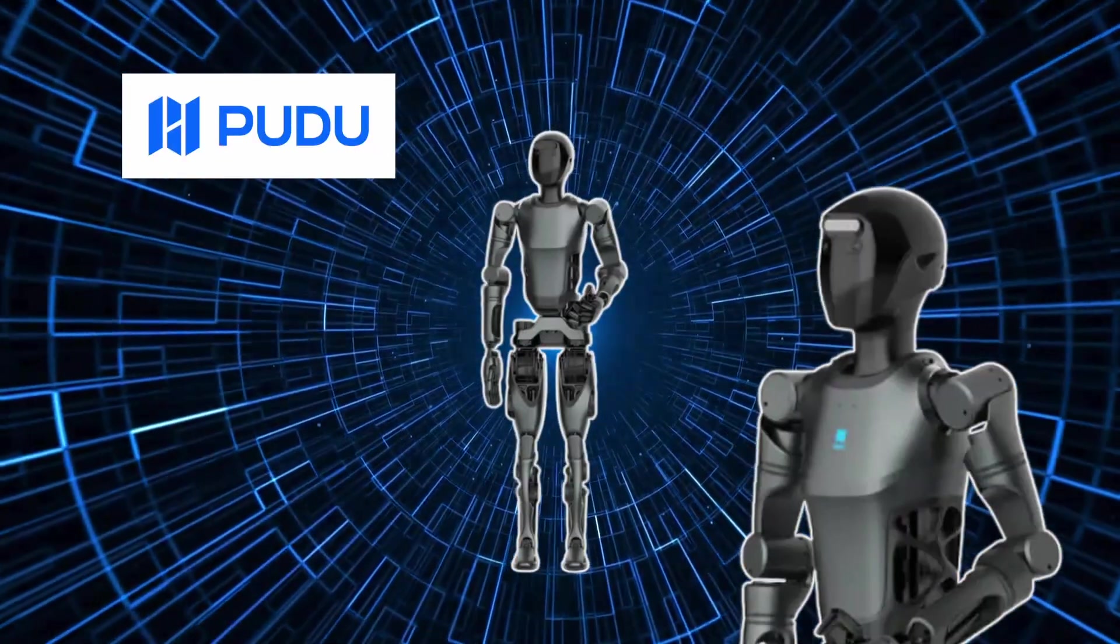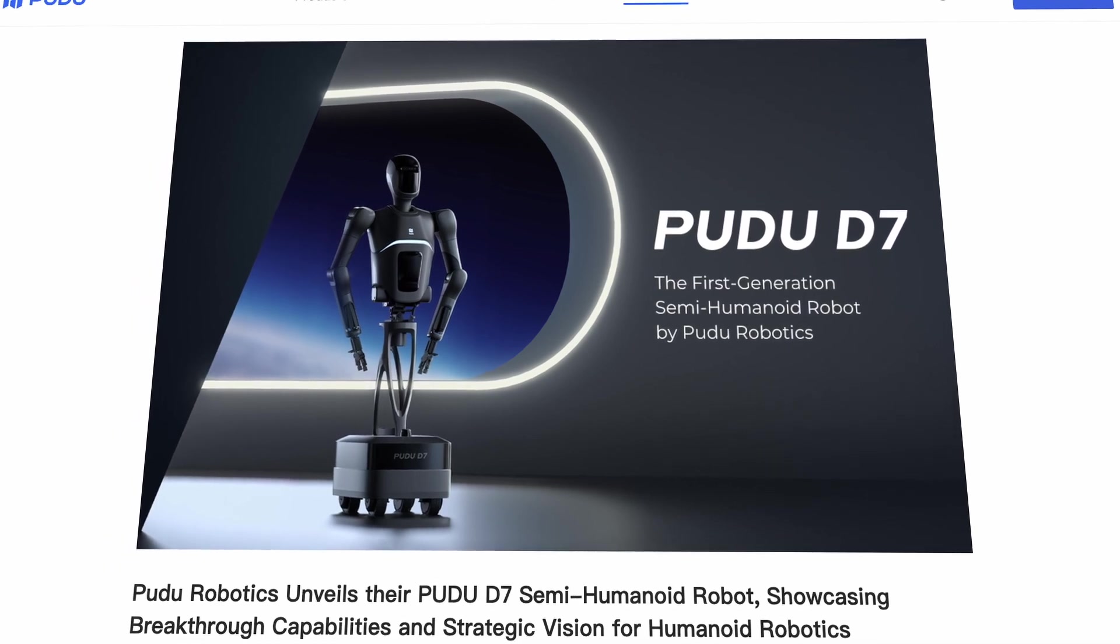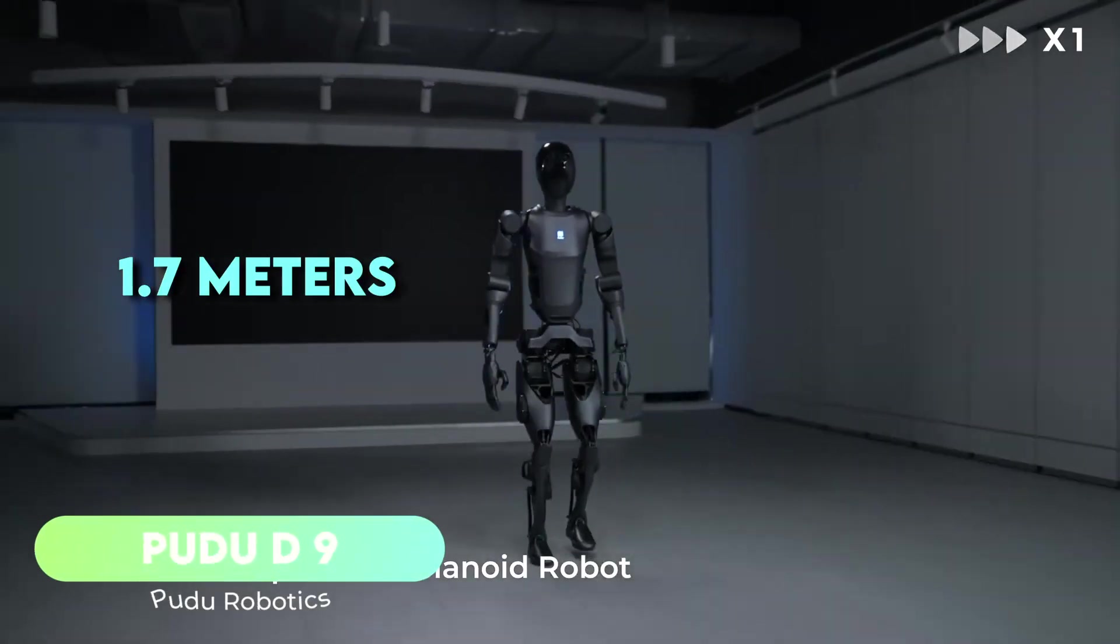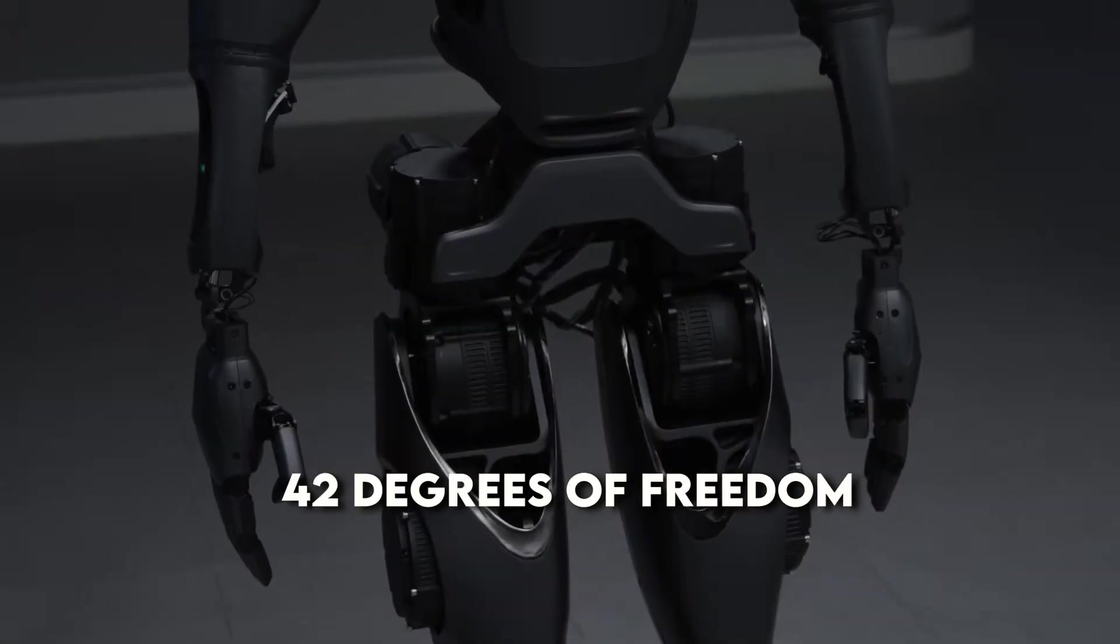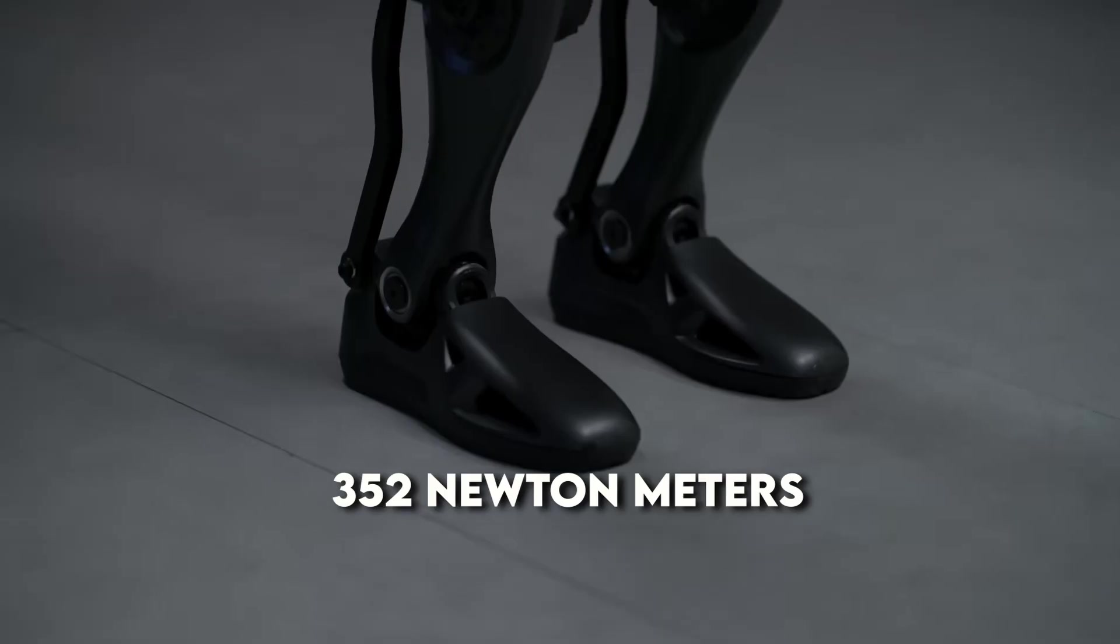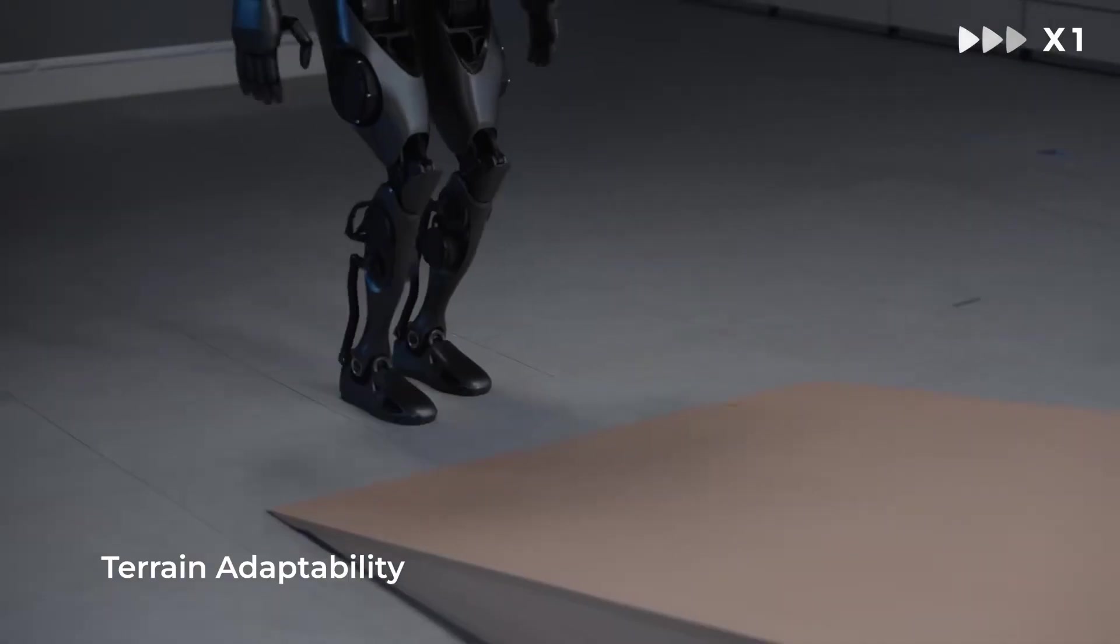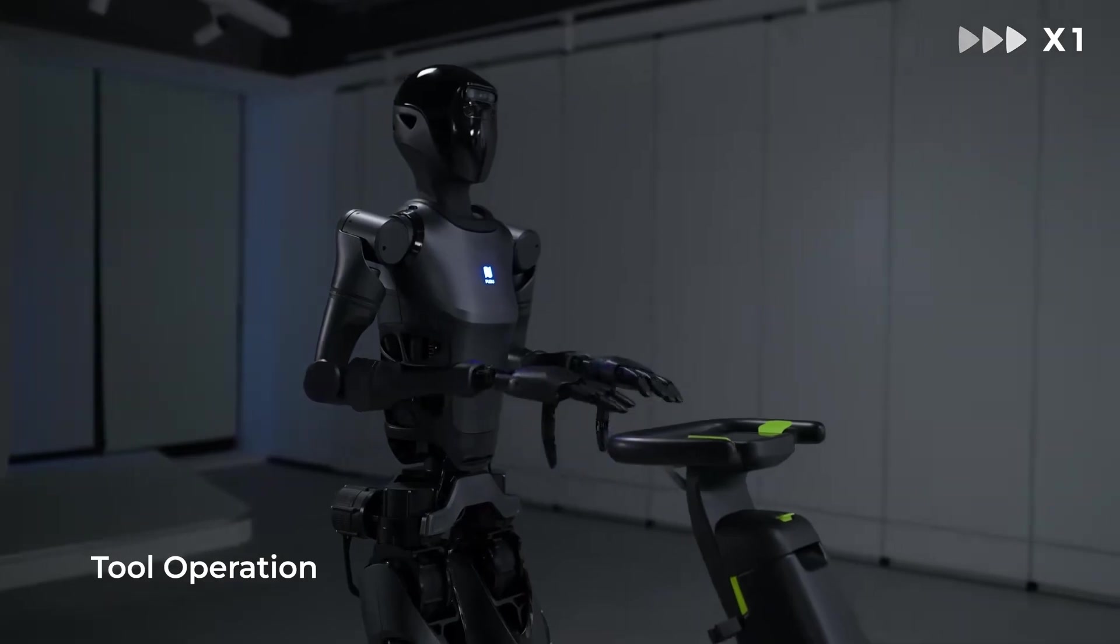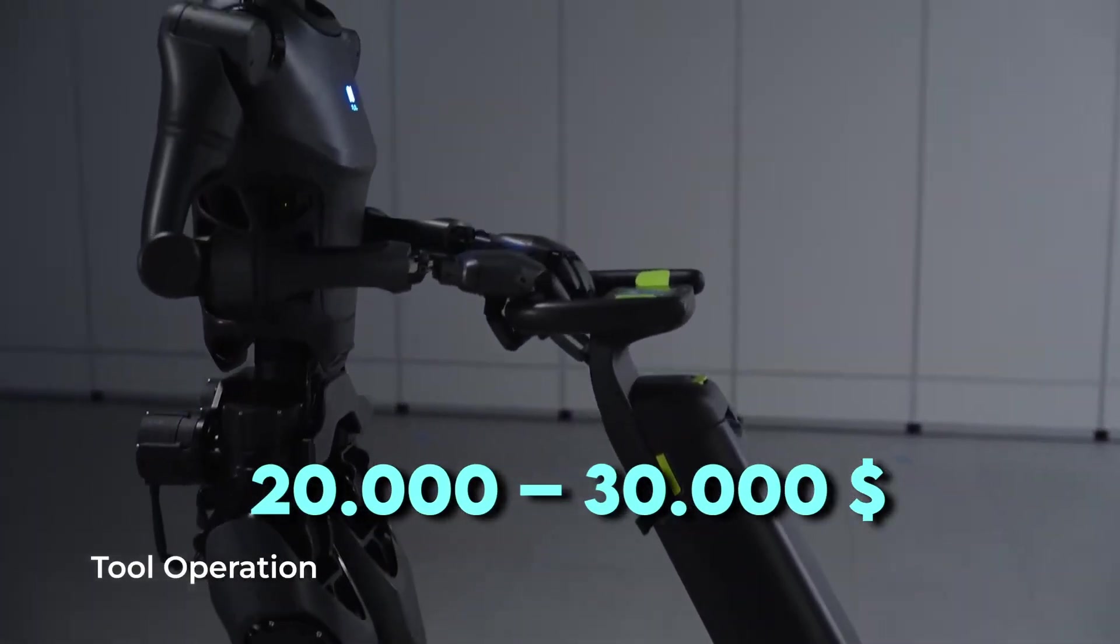Number 3: Pudu D9 by Pudu Robotics. China's Pudu Robotics entered the humanoid game in December 2024 with the debut of the D9. This humanoid stands at 1.7 meters tall, weighs 65 kilograms, and includes 42 degrees of freedom. It also delivers an impressive peak joint torque of 352 newton meters. The D9 can reach walking speeds up to 2 meters per second, navigate slopes up to 10 degrees, and carry up to 20 kilograms on a built-in rear shelf. Pricing has not been confirmed, though industry sources estimate it could land between $20,000 and $30,000 USD per unit.